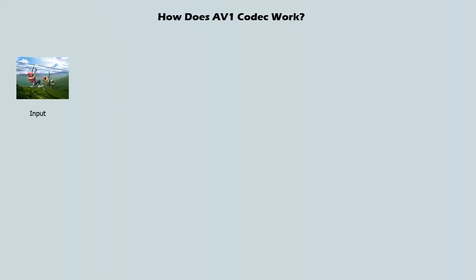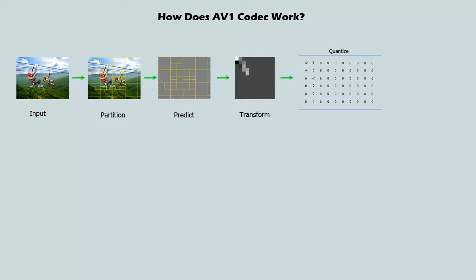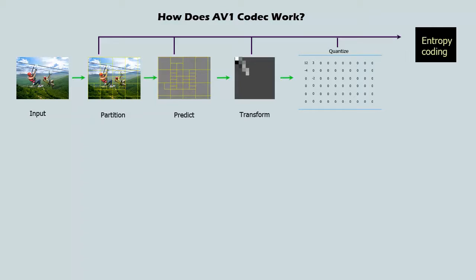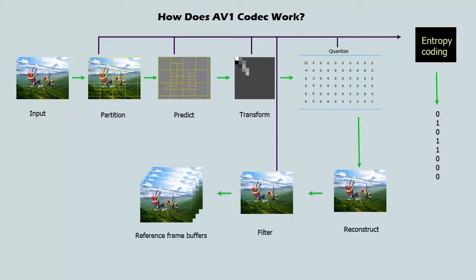For data compression generally, it takes some input, splits it into blocks and partitions, predicts what's in those blocks, applies a transform, quantizes the coefficients to smaller numbers and zeros, and feeds all of that into entropy coding. Then it reconstructs the original image, applies filters, puts that in a reference buffer, and uses all those reference frames to predict future images and also sends it to the output device.